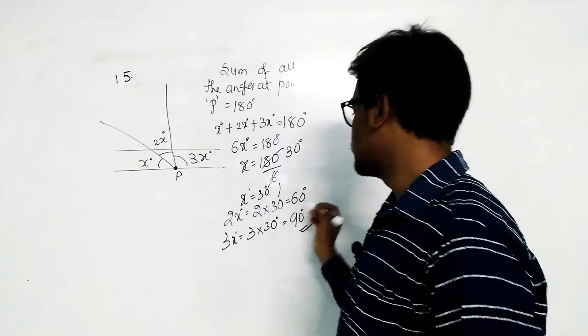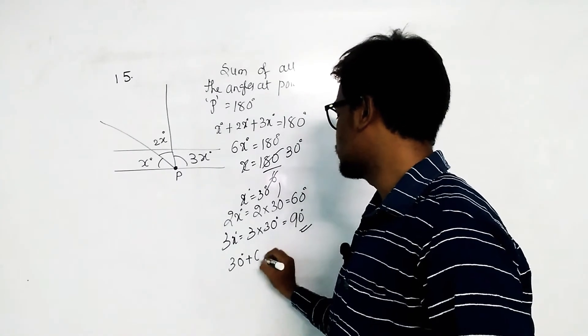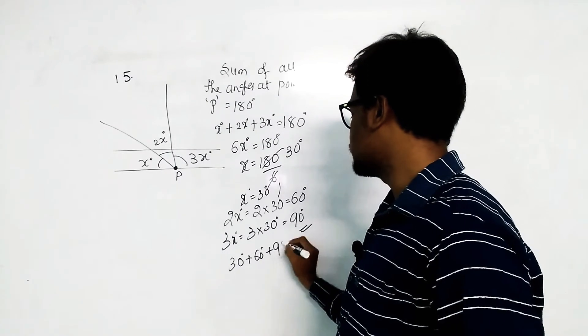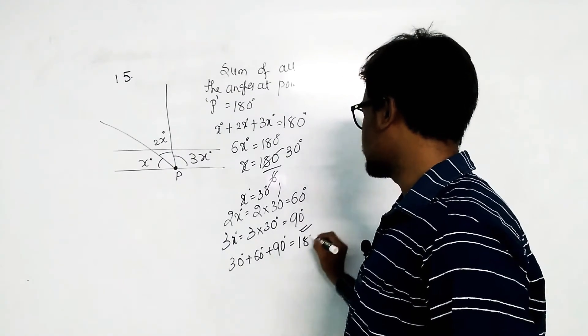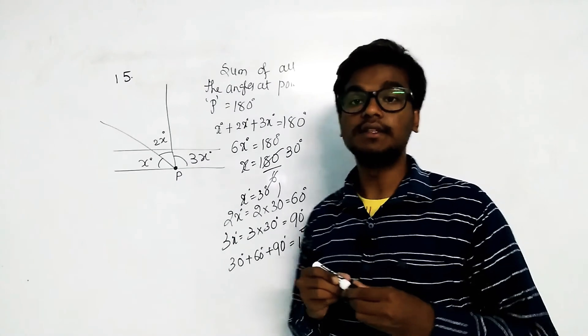Let's check once: 30 plus 60 plus 90 equals 180. So we satisfied all the conditions.